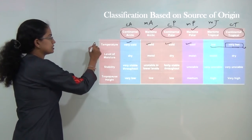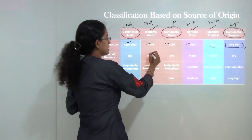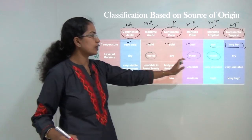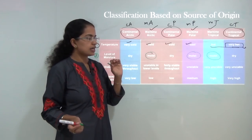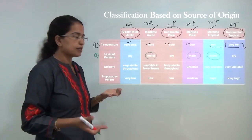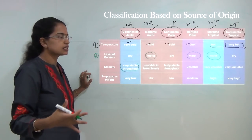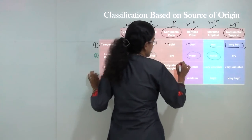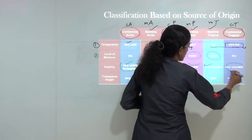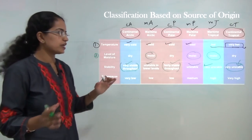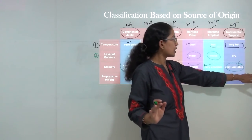Regarding moisture, all maritime air masses have high moisture while continental ones are dry. For stability, continental air masses are generally stable due to less variability in climatic conditions. Maritime areas tend to be unstable due to high surface variability. Continental tropical is an exception — it shows huge variations and cannot remain constant over a large span, so it is classified as unstable.